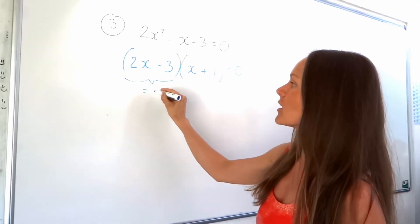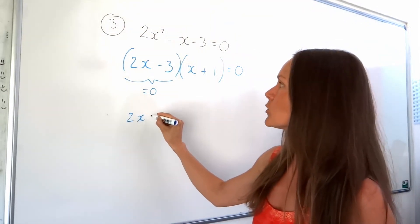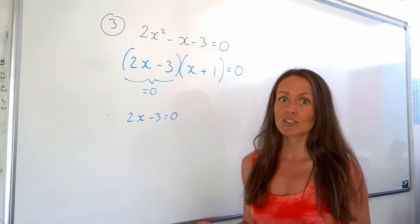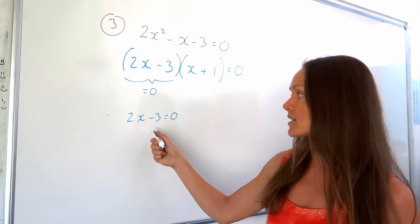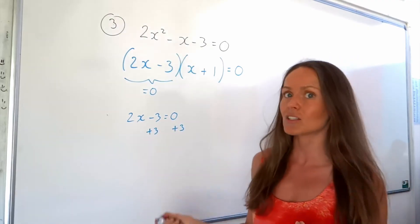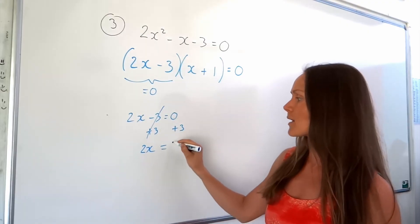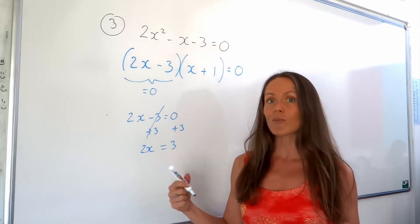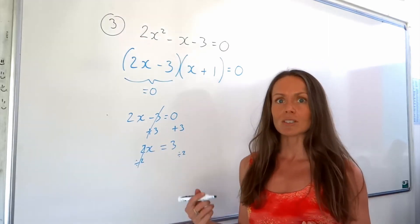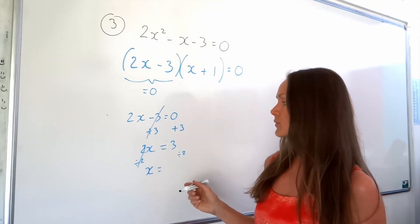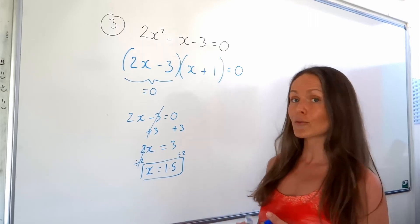If I take the first bracket and imagine it equals 0 — because 0 times a number gives me 0 — I'll write it out: 2x minus 3 equals 0. Because now I'm just solving a linear equation. You have to undo what's happening around x until x is by itself. The opposite of minus 3 is plus 3, and remember you must do the same thing to both sides. The left-hand side cancels to give 2x, and the right-hand side gives 3. Then divide both sides by 2 — the opposite of multiplying by 2 — so 2 divided by 2 leaves 1x, and 3 divided by 2 is 3 over 2, or 1.5. So we've found our first value of x.